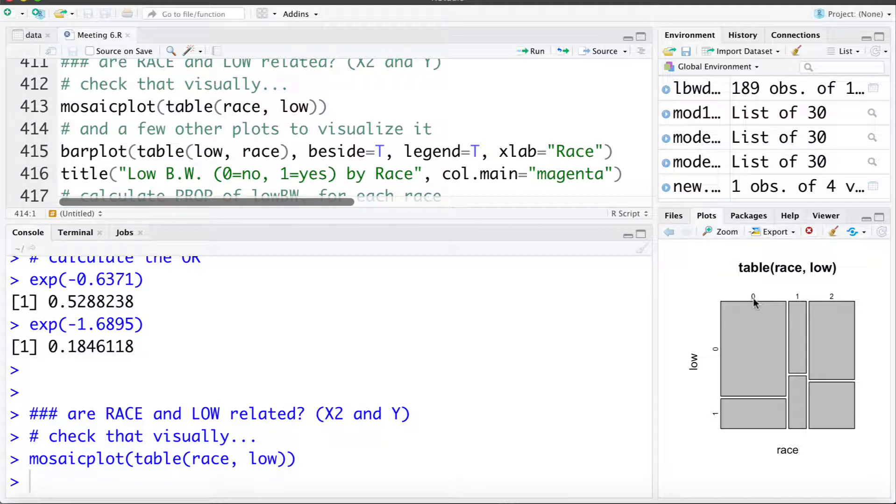Here's race category 0 or white. Looks like about a quarter of them are low birth weight. Here's race category 1 or black, looks like about 40% or so are low birth weight. Race category 2 or other, looks like about a third. So again that's enough to see the association.